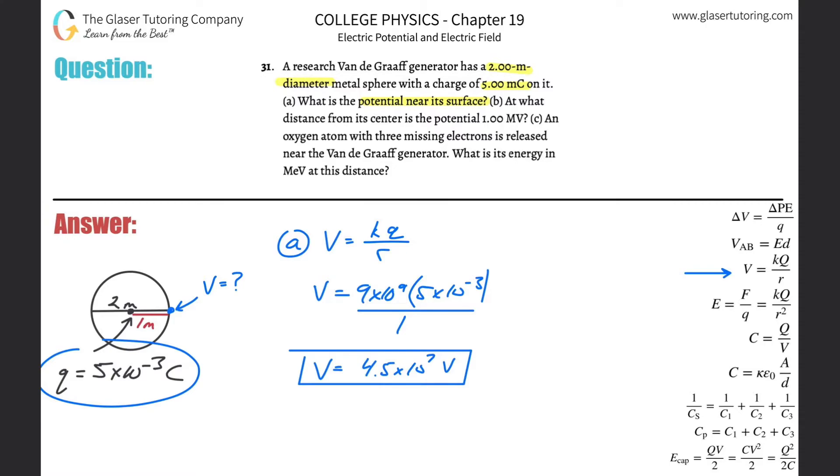Letter B: At what distance from its center is the potential 1 megavolt? This is asking the inverse question. Now they're giving us the voltage and asking us the distance relative to this charge where it would be 1 megavolt. This is 4.5 times 10 to the 7th, and a megavolt is 10 to the 6th, so it's probably going to be further away, maybe some point out here.